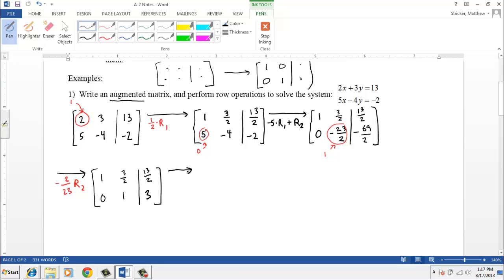And we're almost there. The last thing we need to do is we need to have this position be a 0. And now we're going to do a third type of row operation again. We're going to take negative 3 halves times row 2 and add that to row 1. And when we do that, the bottom row is going to stay the same. And when we take negative 3 halves times 0, that's still 0. So when we add it to 1, it stays 1. But the other two positions do change because negative 3 halves times 1 is negative 3 halves. And when we add that to 3 halves, we get the desired 0. And then when we take negative 3 halves times 3, which is negative 9 halves, and we add that to 13 halves, that comes out to be a positive 2.